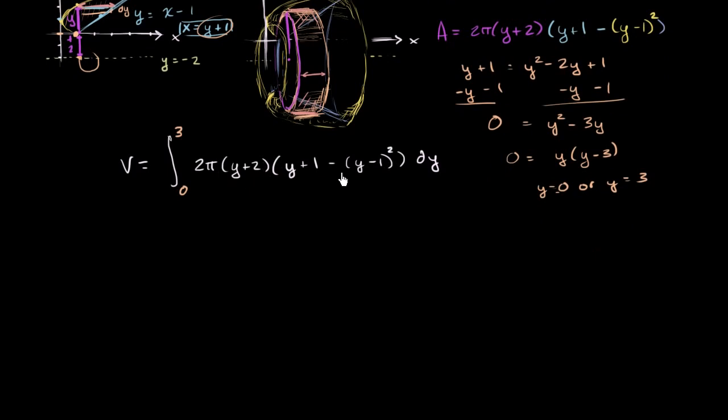The main thing is just simplifying this expression. I'll start off by trying to simplify this part of it. So that's going to be y plus 1 minus y squared minus 2y plus 1. I just squared, expanded out this binomial.